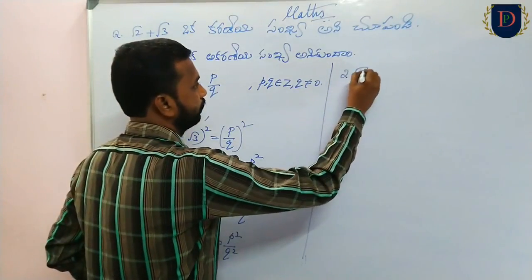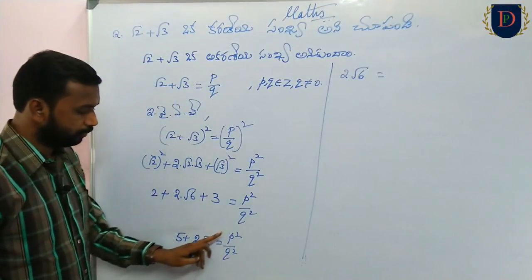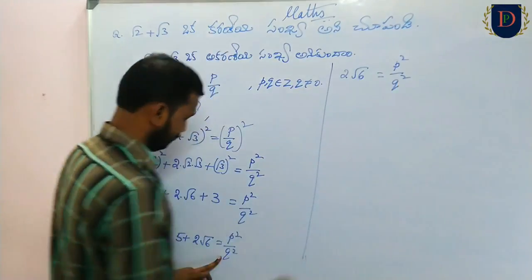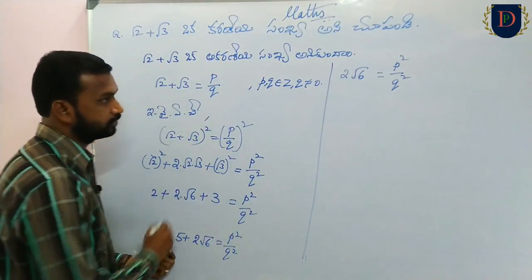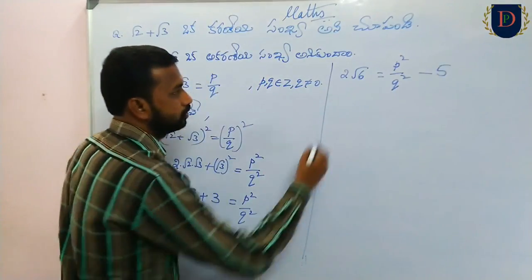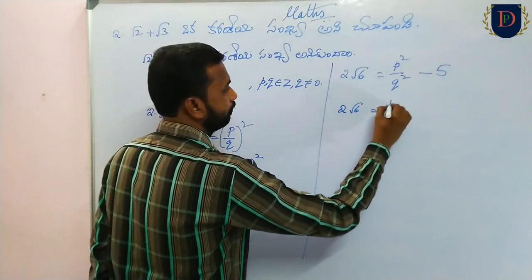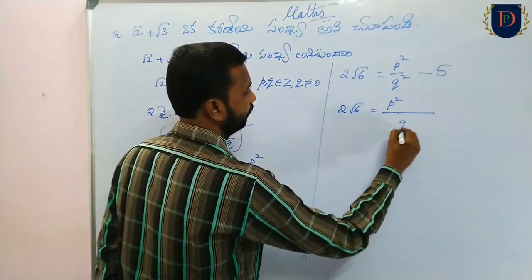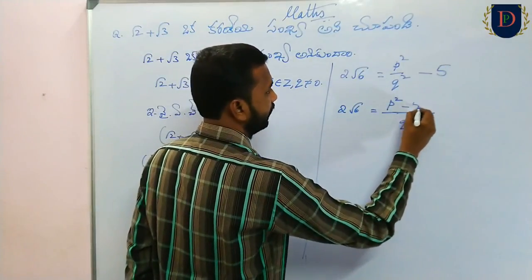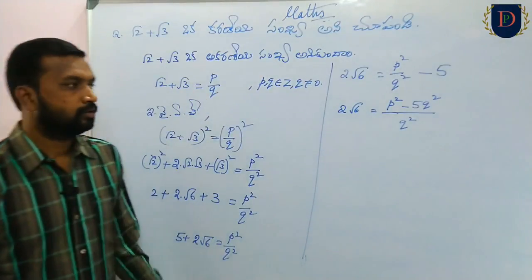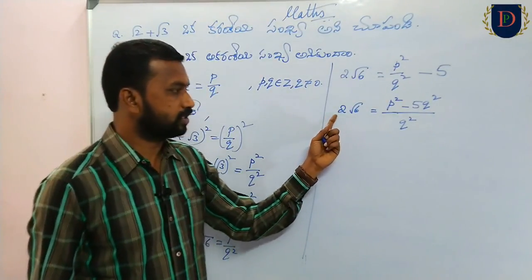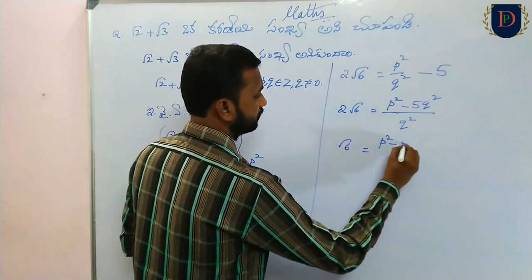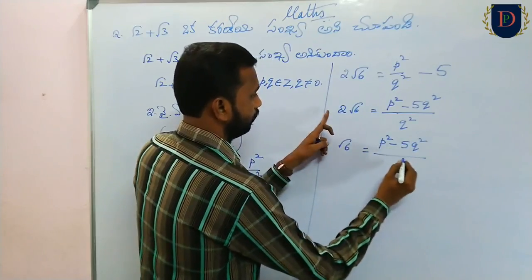So: 2 root 6 equals p squared by q squared minus 5. Bringing q squared as LCM: 5q squared, so 2 root 6 equals p squared minus 5q squared by q squared. Therefore root 6 is equal to p squared minus 5q squared by 2q squared.